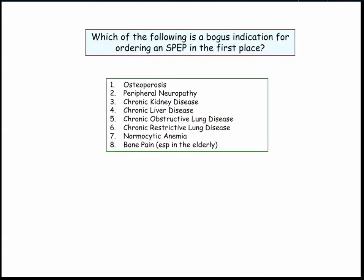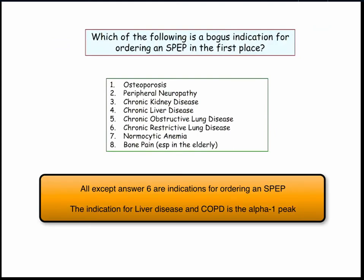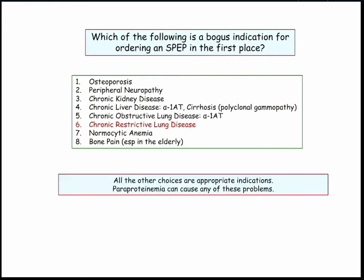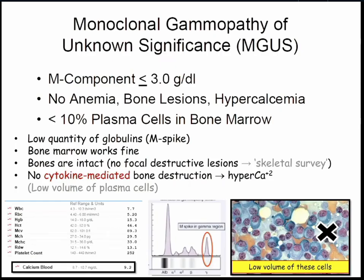You've got to distinguish the two. These are all indications for ordering a protein electrophoresis. So here the problem is you can order a lot of S-peps, and they're going to come back with this spike. Did they have myeloma? Not necessarily. So what's the difference between MGUS and myeloma? With MGUS, you have a small M-spike, no anemia, no bone lesions, calcium is okay, and if you get to a bone marrow, there are not that many plasma cells.